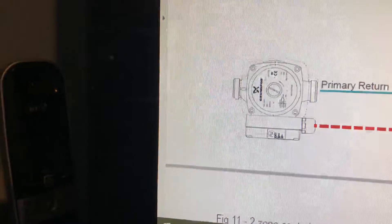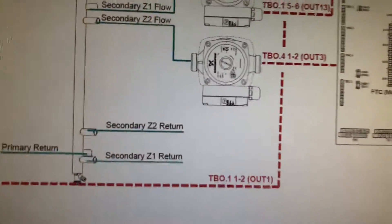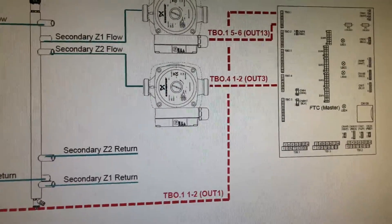On this diagram here you can see your main pump. That is wired up into TBO 1 and 2. This is the wiring diagram Mitsubishi give you. It's wrong.